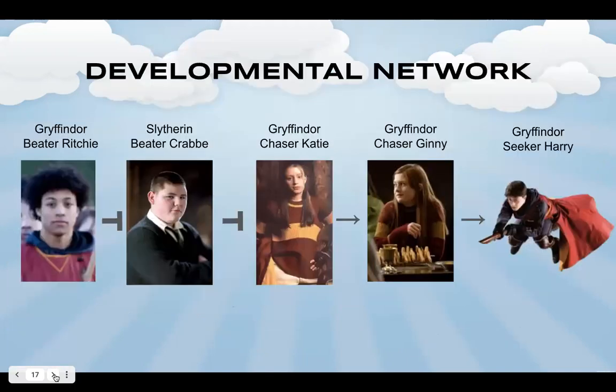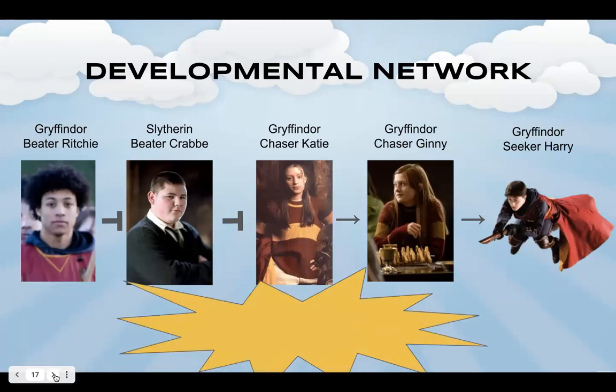So the gene Ritchie represses the transcription of the gene Crab, which usually represses the transcription of the gene Katie, which activates transcription of the gene Ginny, which activates the transcription of the gene Harry. So the wild-type phenotype is Gryffindor winning the game because Harry caught the snitch.